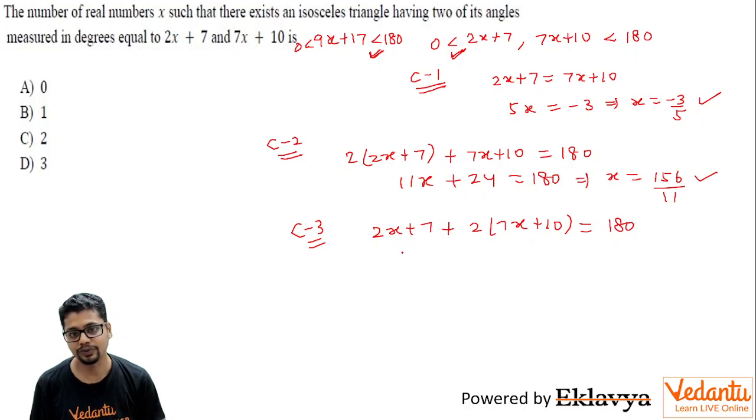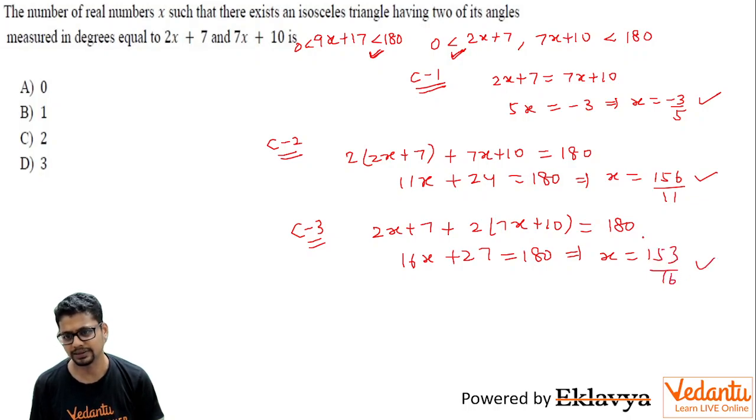So here what you have is 16x plus 27 is equal to 180, so you have x equal to 153 by 16. So even this seems to be acceptable for the same reason. So answer should be d, thanks for listening.